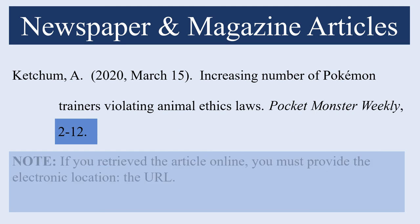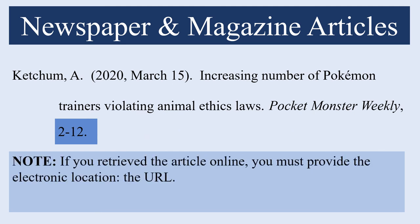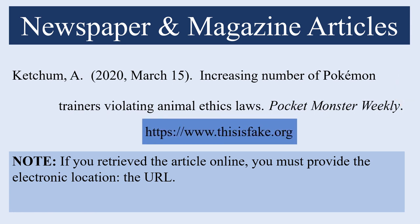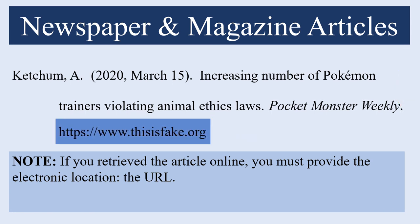If you retrieve the source online you must provide an electronic source or location. In this case you will close out the name of the newspaper or magazine with a period and then provide the URL, which according to APA 7th edition must be hyperlinked.